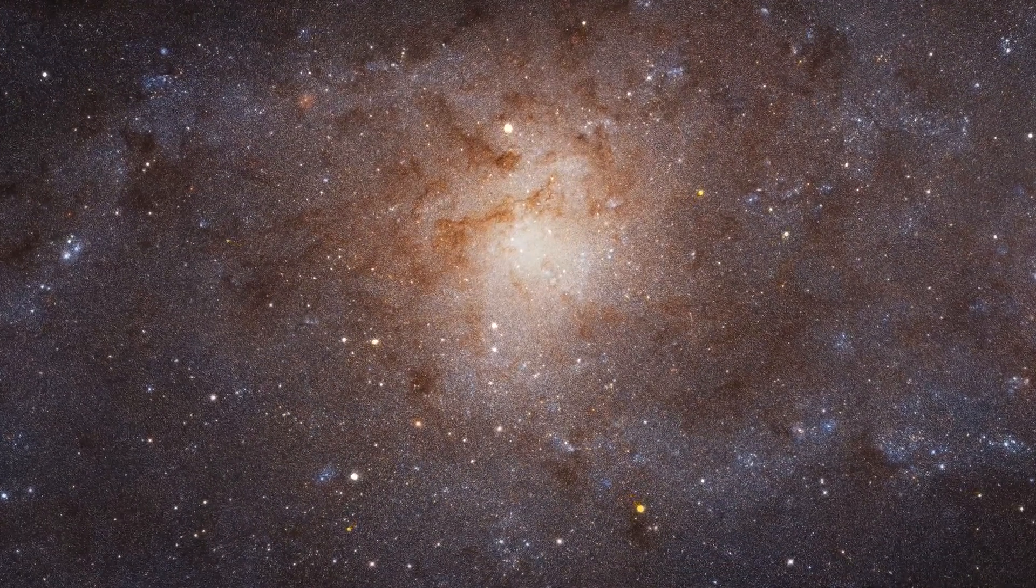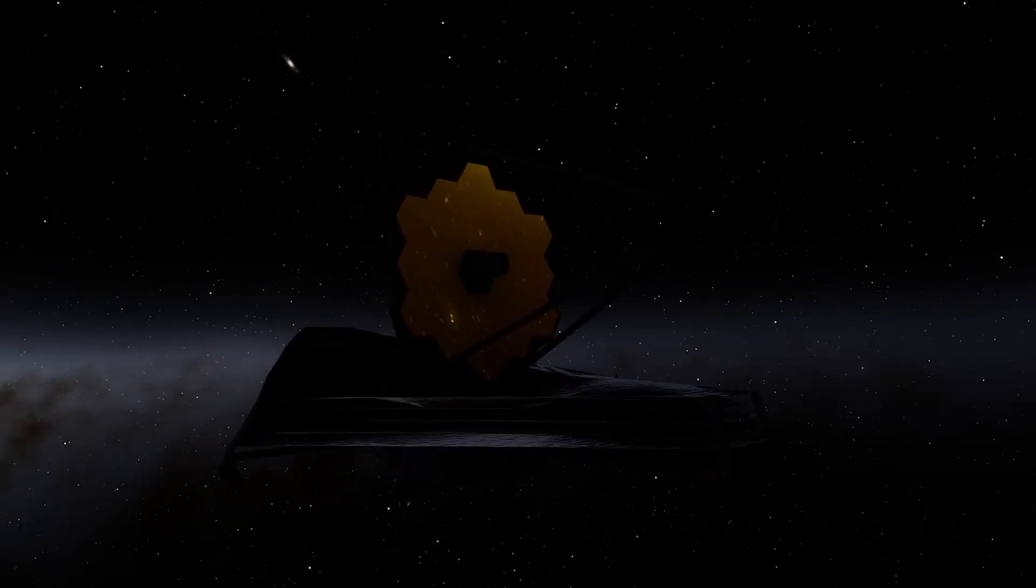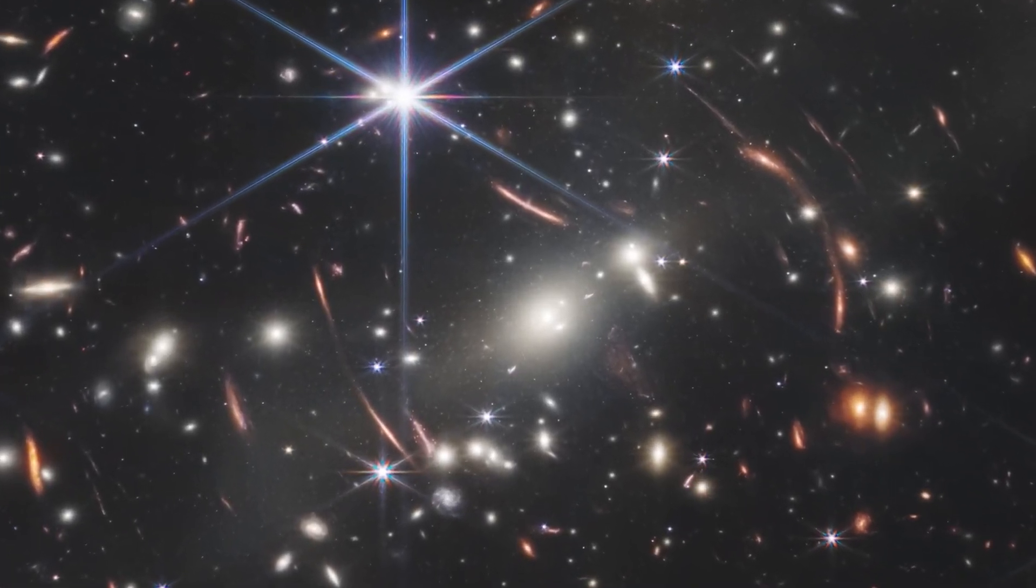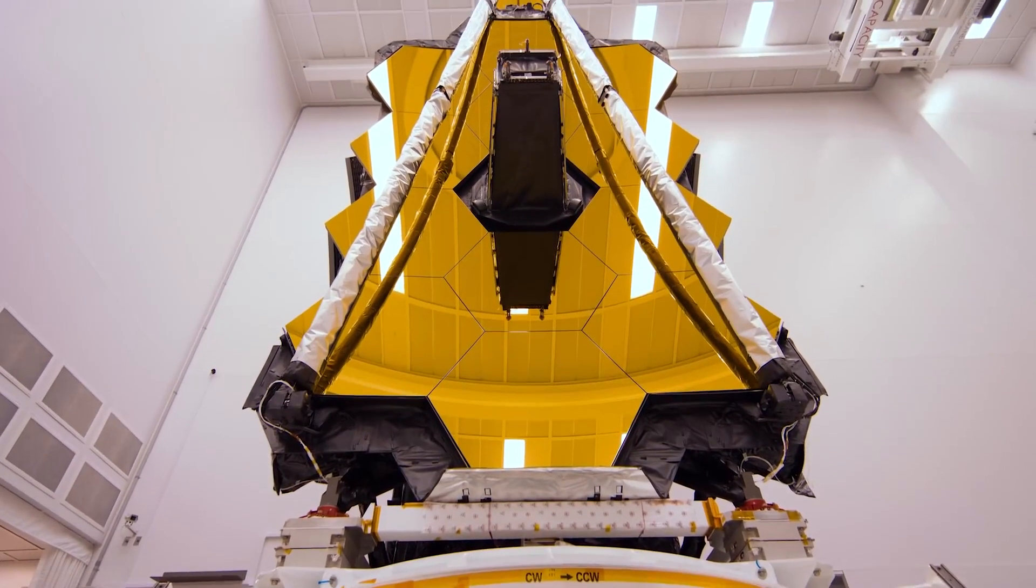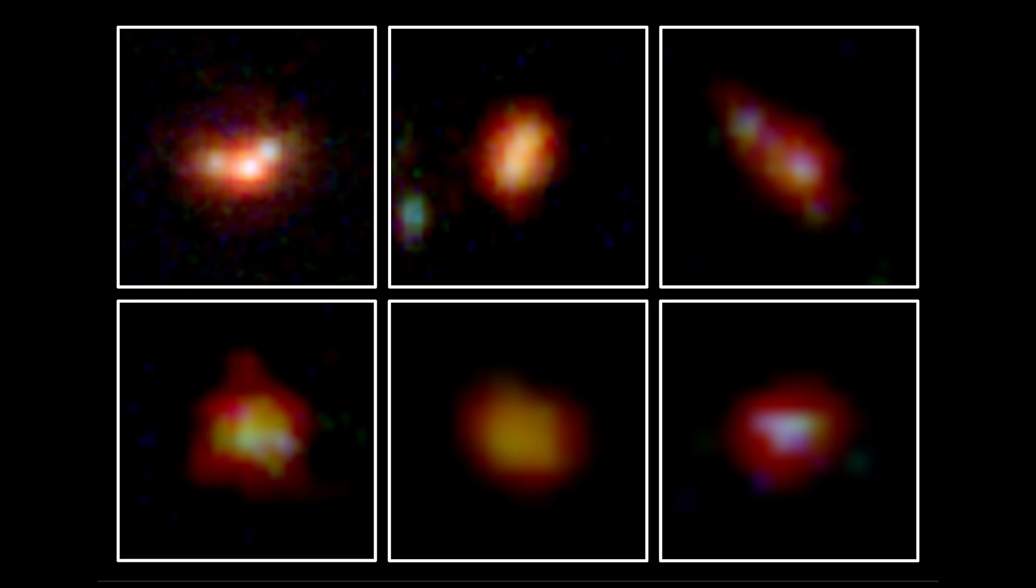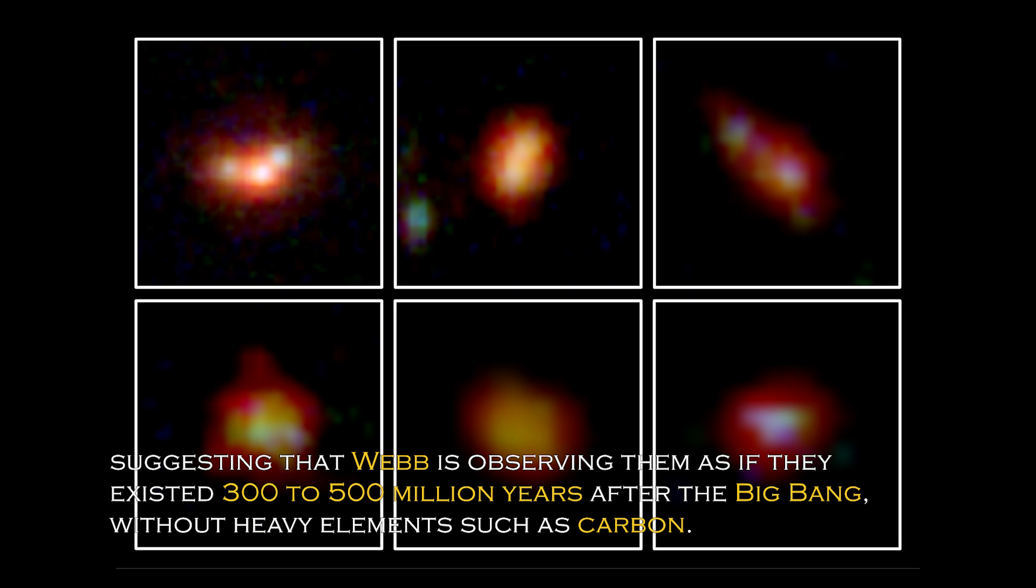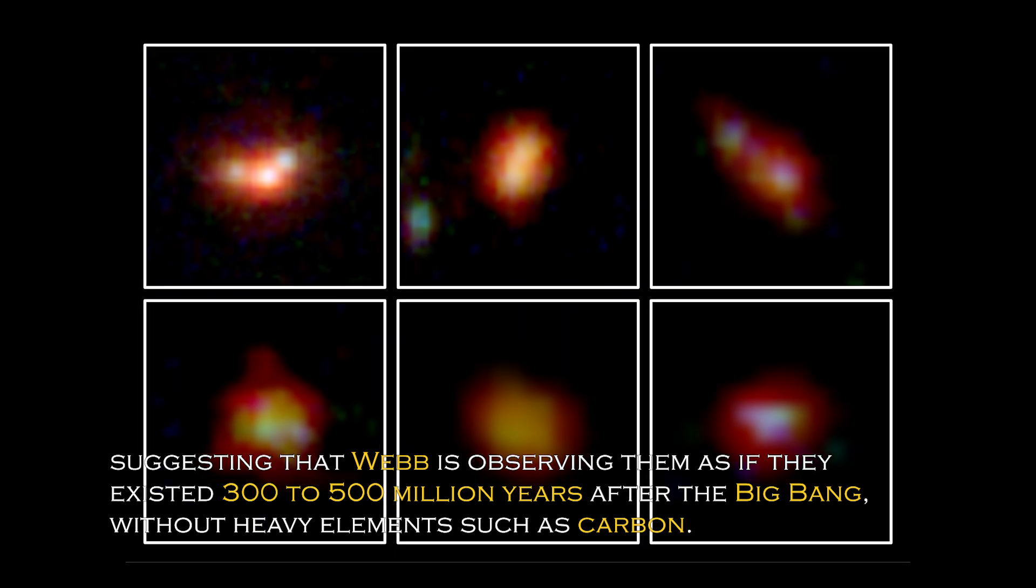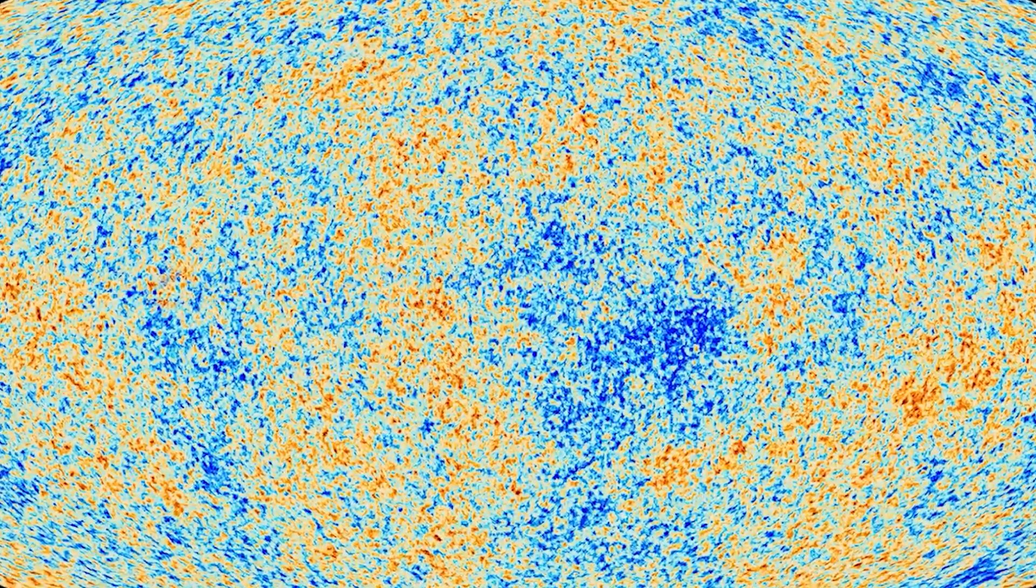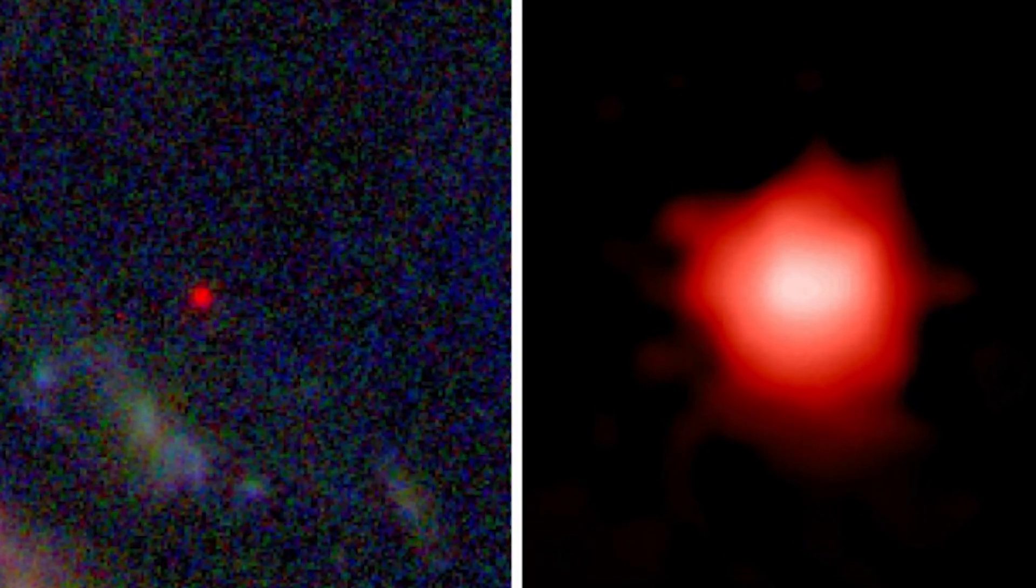Discovery has had a major impact on our understanding of the universe and has prompted NASA to develop even more powerful telescopes than the James Webb Space Telescope to confirm whether our understanding of the Big Bang is correct. Data obtained from Webb's spectrometer and near-infrared camera have revealed that four of the six primordial galaxies have extreme redshifts, suggesting that Webb is observing them as if they existed 300 to 5 billion years after the Big Bang, without heavy elements such as carbon. This is surprising since the universe is estimated to be 13.8 billion years old, and the existence of these galaxies suggests that we need to revise our understanding of the early universe.